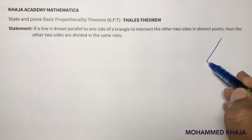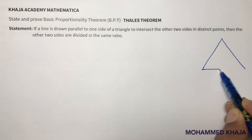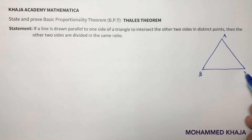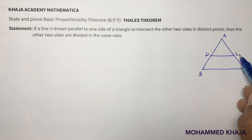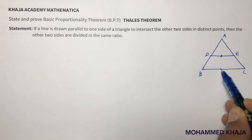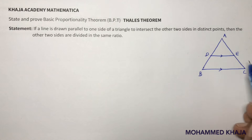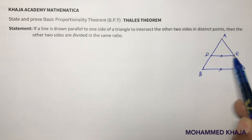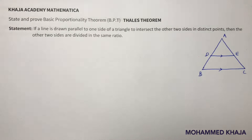In triangle ABC, if a line DE is drawn parallel to BC, then DE divides AB and AC in the same ratio at two distinct points D and E. So we need to prove AD/DB = AE/EC.